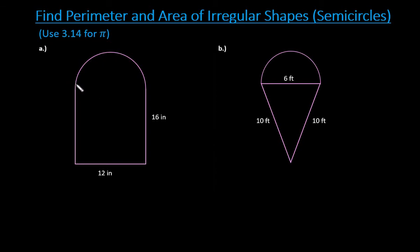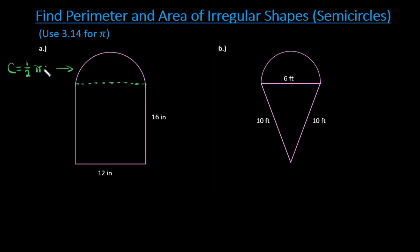For this first figure, we have a semicircle on top of a rectangle. The perimeter is the distance around the outside. For the semicircle we use the circumference formula — half of pi times d. I'm using pi times d because I know the diameter is 12 inches, so rather than converting to radius, I'll just do half of pi times d since it's a semicircle.